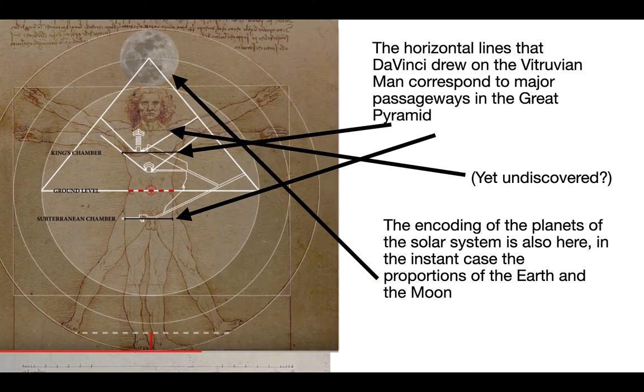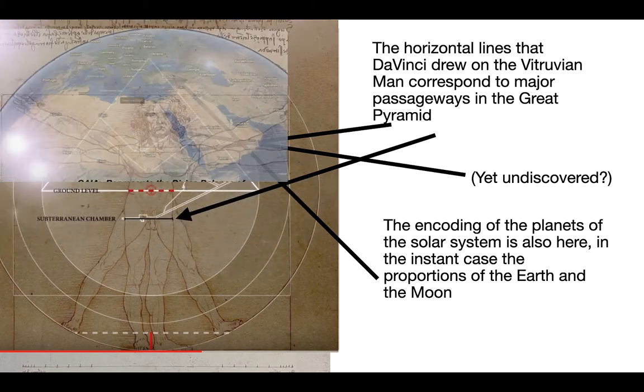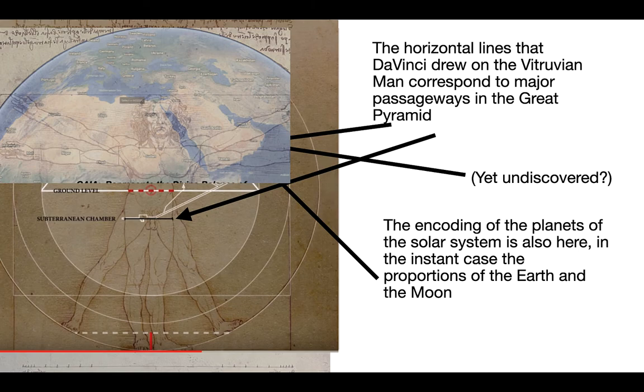Robert Grant has done some work on that. The encoding of the planets of the solar system is here. In the instant case, the proportions of the Earth and Moon. In this Vitruvian Man drawing, the proportions of the Earth and Moon are plainly revealed. It's incredible.